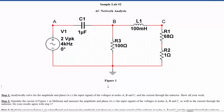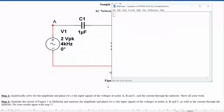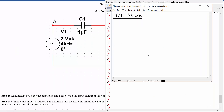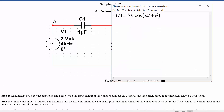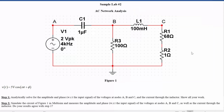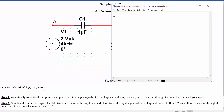So let's introduce — or remind ourselves — what a phasor is. If you've got a time domain signal, something like 5 volts cosine of omega t plus phi, and you want to convert that to a phasor, what you do is you only use the amplitude and the phase in a complex exponential. So 5 volts e to the j phi.